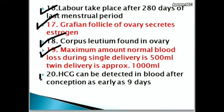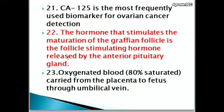HCG (Human chorionic gonadotropin) can be detected in blood after conception as early as 9 days. CA-125 is the most frequently used biomarker for ovarian cancer detection. The hormone that stimulates the maturation of the Graafian follicle is follicle stimulating hormone (FSH), released by the anterior pituitary gland.